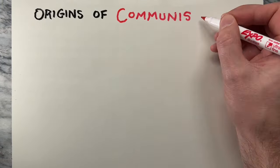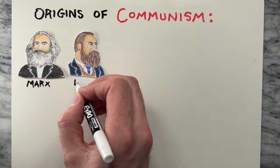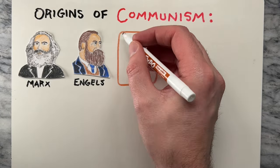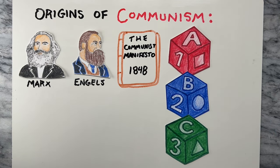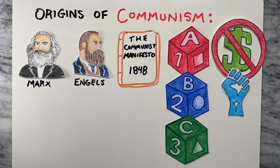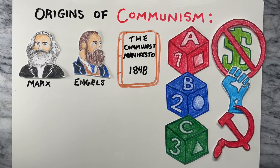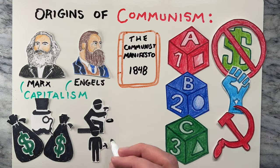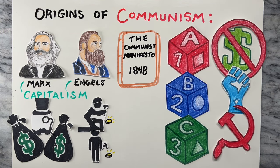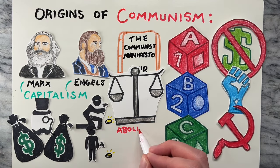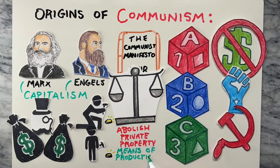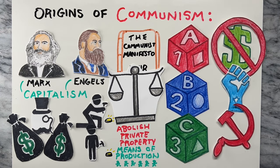The origins of communism can be traced back to the writings of Karl Marx and Friedrich Engels in their book The Communist Manifesto, published in 1848. They laid out the basic principles of communism, arguing that the capitalist system was inherently flawed and would eventually be replaced by a socialist system, which would in turn lead to communism. According to Marx and Engels, capitalism created a society in which the wealthy controlled the means of production while the working class was exploited and forced to sell their labor for low wages. They argued that this system was unsustainable and that the only way to create a truly just society was to abolish private property and create a system in which the means of production were owned by the people.